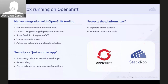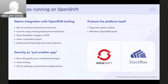StackRox is able to auto-discover containerized OpenShift and Kubernetes services. We monitor and detect threats on the containers running OpenShift services themselves. This is very interesting because the orchestrator represents a distinct and separate attack surface that is also critical to safeguard.